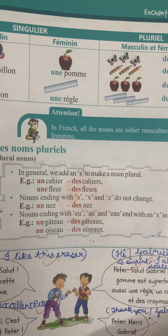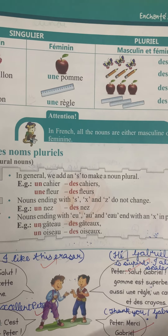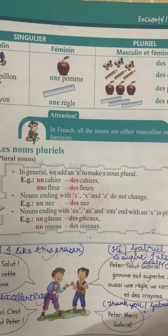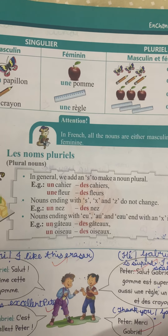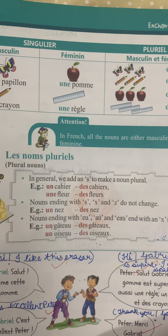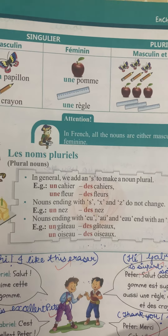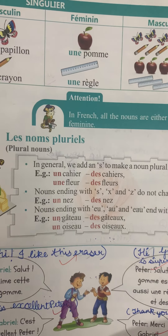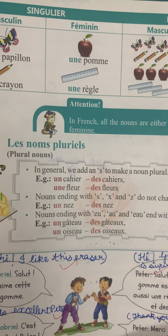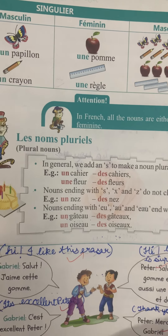Un nez becomes des nez. Nouns ending with 'eu', 'au', and 'eau' end with an 'x' in the plural. Un gâteau becomes des gâteaux. Un oiseau becomes des oiseaux. Cahier means book, fleur means flower, nez means nose, gâteau means cake, and oiseau means bird.